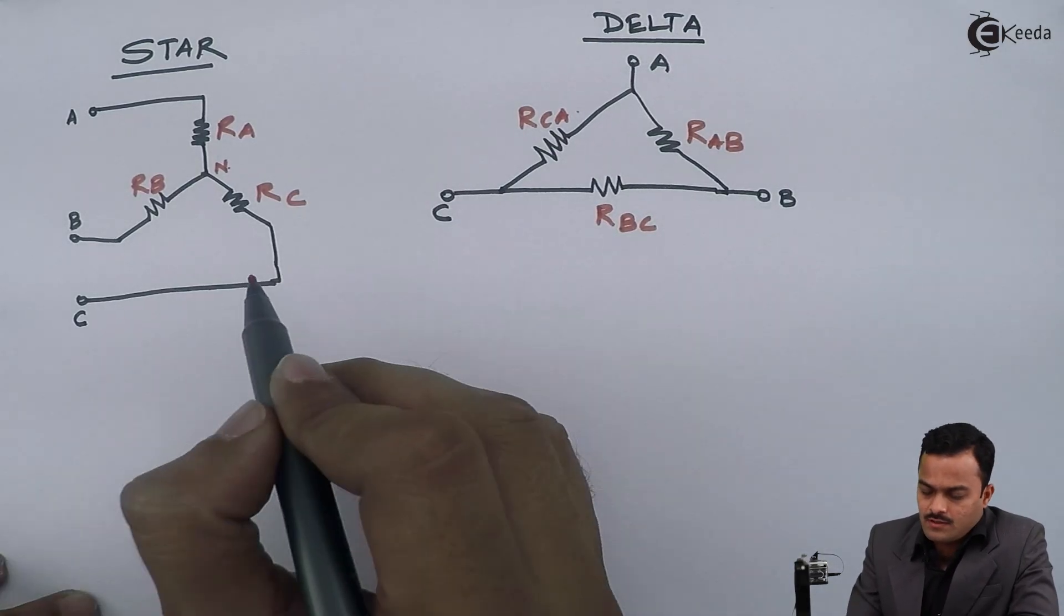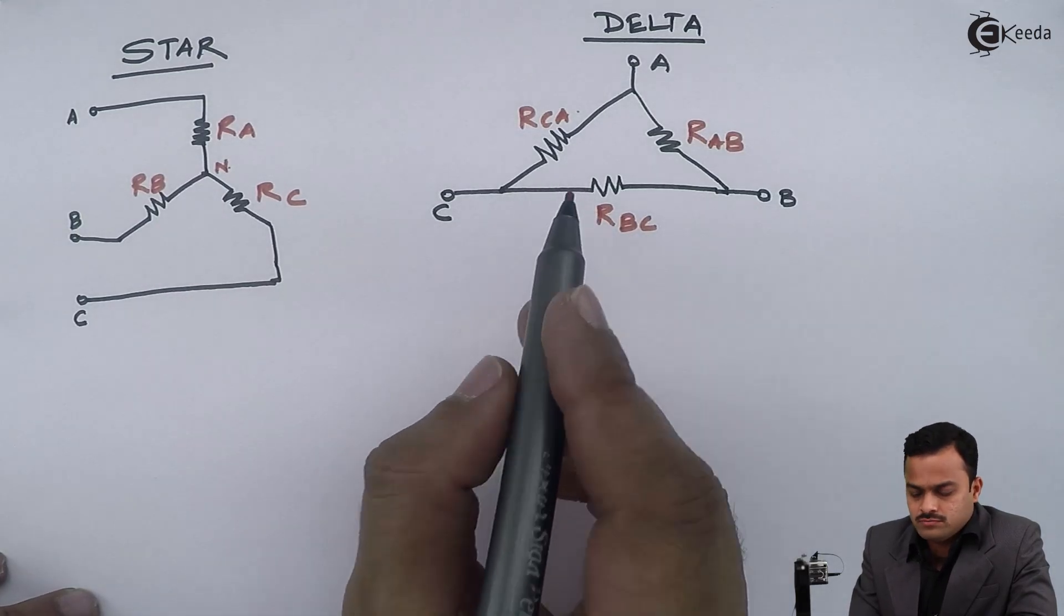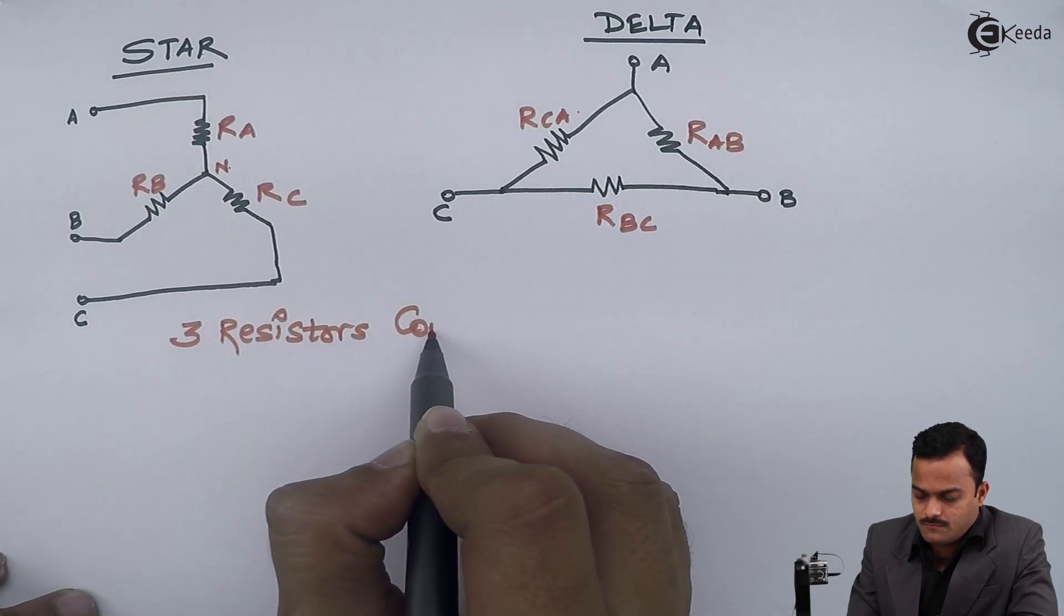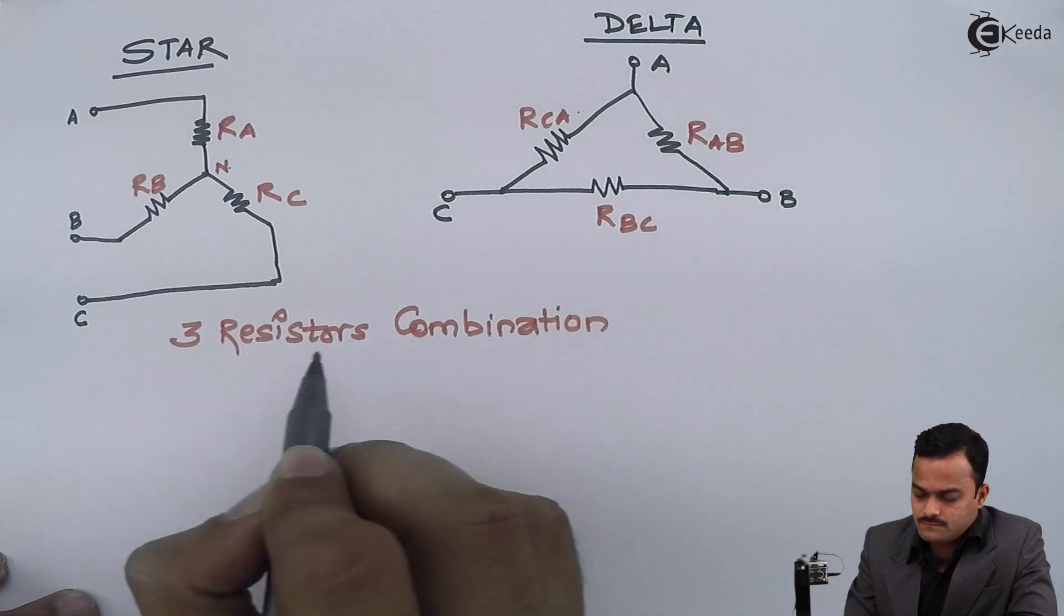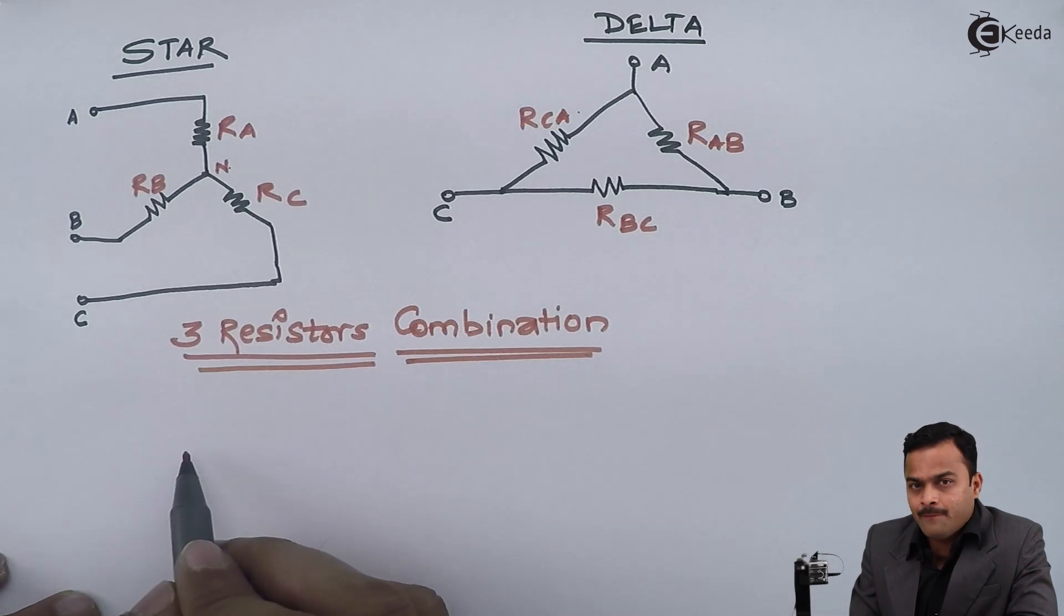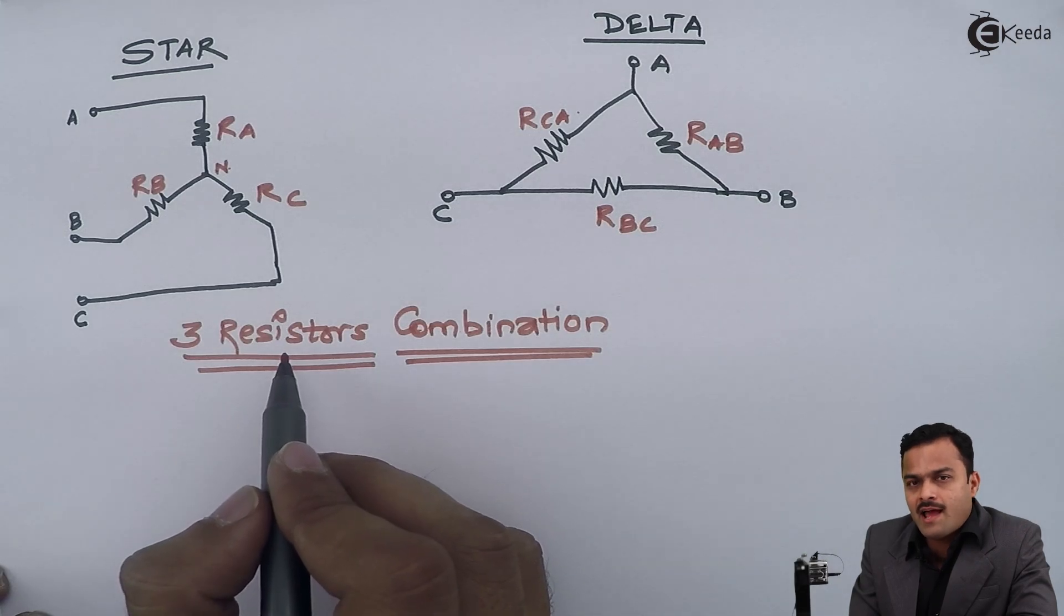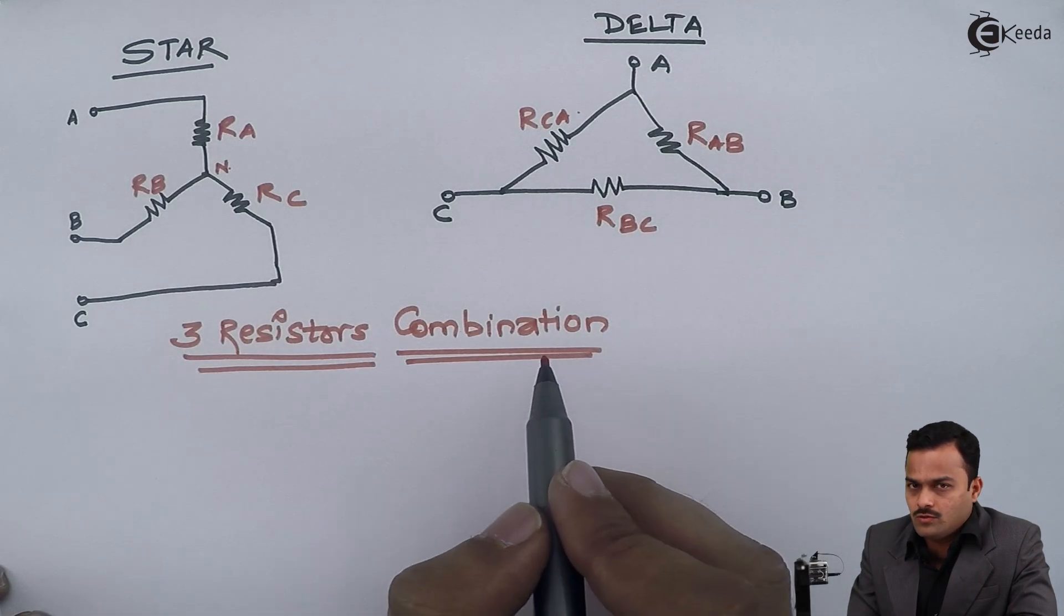First of all, whether it's a star or delta, it's telling about three resistors combination. So it's very important, it's talking about three resistors compulsorily. It's not like series and parallel where you can have N number of resistors. Delta and star strictly speak about the three resistors combination only.